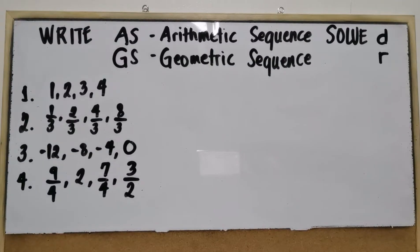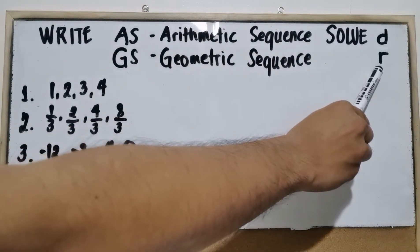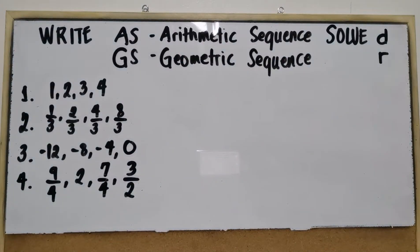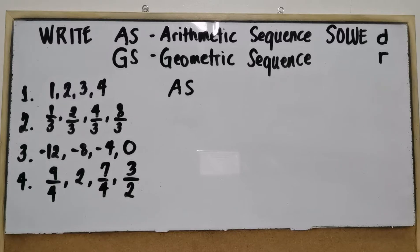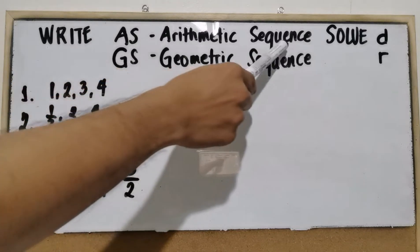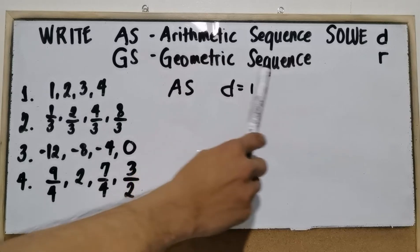For more practice, let's try to answer this activity. Write AS if it's an arithmetic sequence and GS if it's a geometric sequence, and solve for D (common difference) or R (common ratio). Let's review: arithmetic sequence has a common difference; geometric sequence has a common ratio.